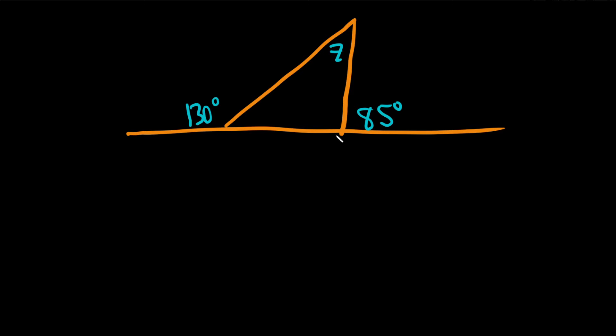In this problem, we have a triangle, and we have to find this angle here, Z. That's the letter Z. So we need to find these other angles here inside this triangle.